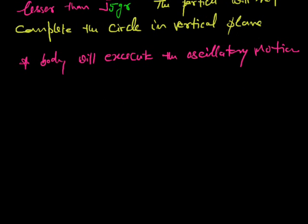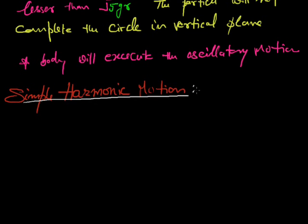Now, moving to the next point: simple harmonic motion. Periodic motion is divided into two parts — one is circular or elliptical, and another is harmonic motion. Harmonic means oscillatory motion, and there are two types of oscillatory motion: linear oscillatory motion (linear simple harmonic motion) and angular oscillatory motion.